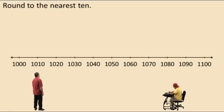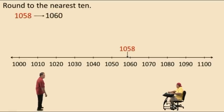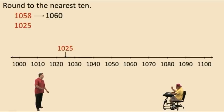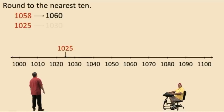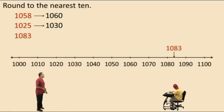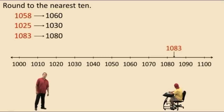Now let's round to the nearest ten using some larger numbers. 1058 — is it closer to 1050 or 1060? Charlie says 1060 — very nice! See, it's easy when you look at a number line. 1025 is right in the middle of 1020 and 1030 — when you're in the middle you move to the right — so it rounds to 1030. 1083 is between 1080 and 1090. Charlie says it's closer to 1080 — very nice — so it rounds to 1080.